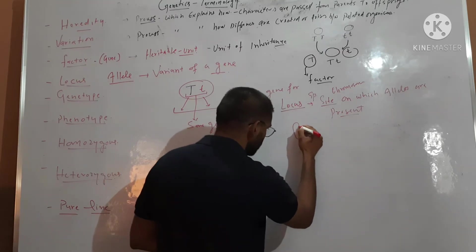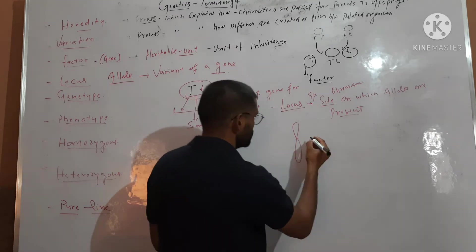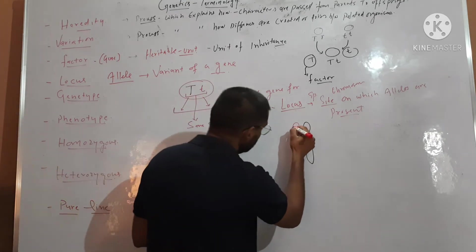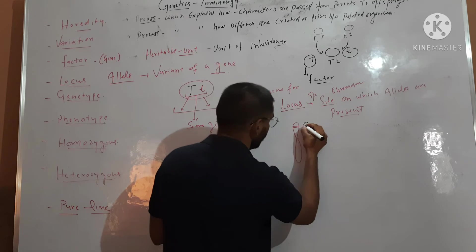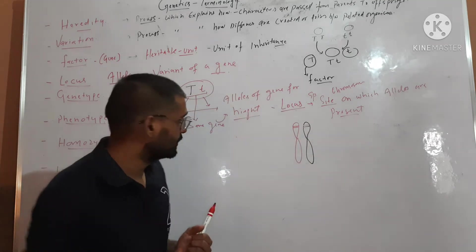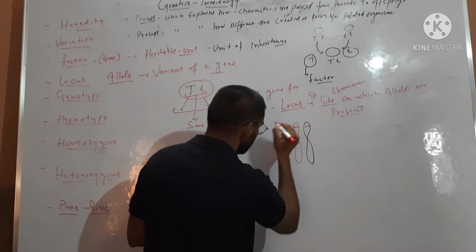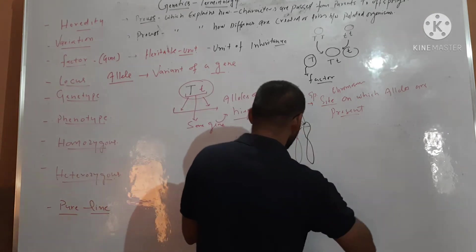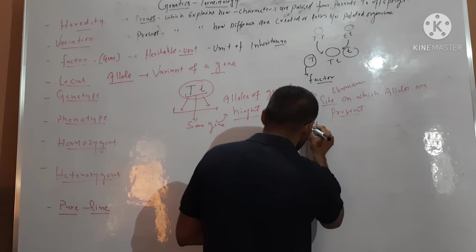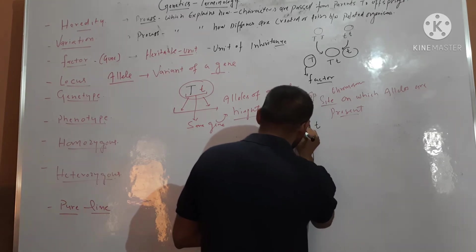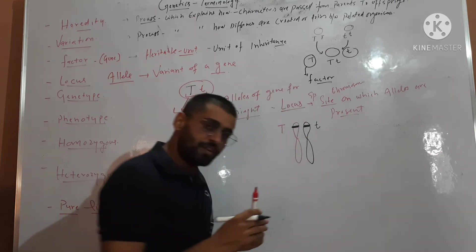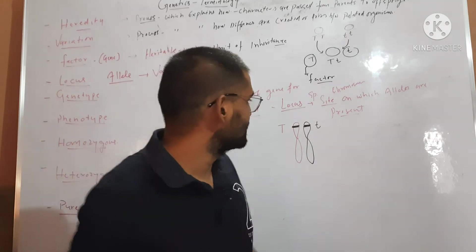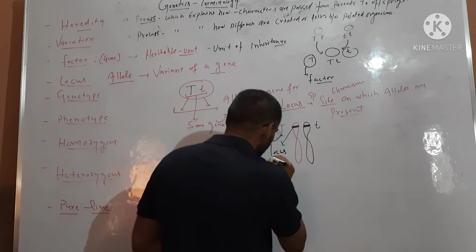We have a chromosome and another chromosome — a homologous chromosome. Suppose capital T, the gene for tallness, is present at a position, and the gene for dwarfness is present at this same position on the homologous chromosome. So this position is called locus — the specific position on a chromosome on which alleles are present.